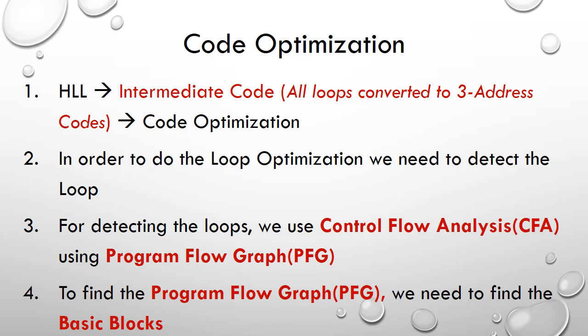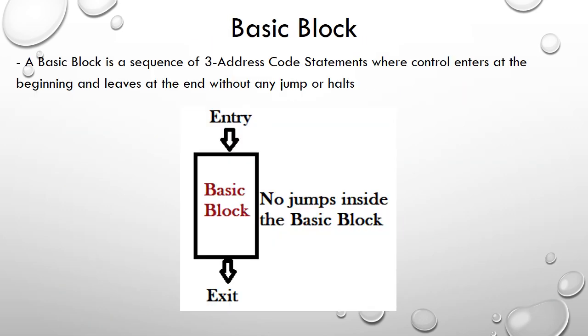Control flow analysis is done on the program flow graph. To detect a loop, we perform control flow analysis on the program flow graph. The program flow graph is constructed by finding the basic blocks and determining the movement from one basic block to another. Any cycle found in the program flow graph will actually signify a loop.